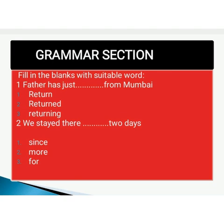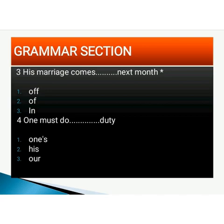The next question is: 'His marriage comes ___ next month.' Your options are: first is 'off' (O-double-F), second is 'of' (O-F), and third is 'in.' Dear children, the right answer is: 'His marriage comes off' — O-double-F.